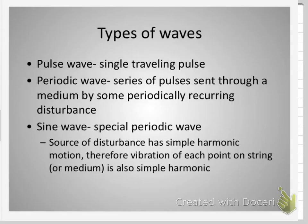A periodic wave is when you stand there and continuously shake the end, so you have a series of pulses all traveling through the same medium. Ocean waves are a periodic wave form. If you stand with your toes at the edge of a small lake and there are ripples lapping the shore, those are a periodic wave — periodic disturbances traveling through the water and reaching shore at periodic intervals. The periodic disturbance is very often wind.